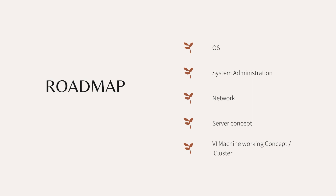The fourth one is Server Concept. In this server concept, you can use Tomcat server or Docker. You can use Docker — there is a full video and an introduction video available; you can see it in the description below. And the fifth thing is the Virtual Machine Working Concept — it's a cluster. The VM working concept cluster is an important part of the roadmap.